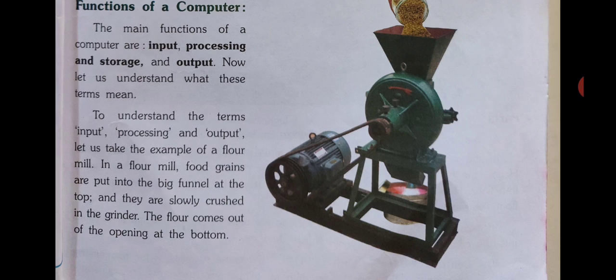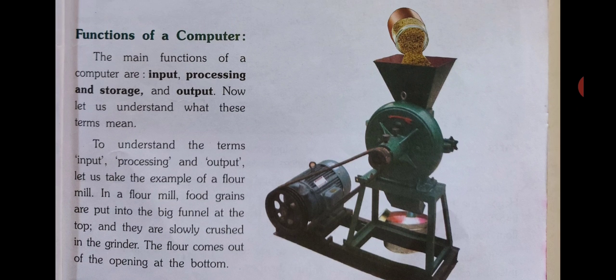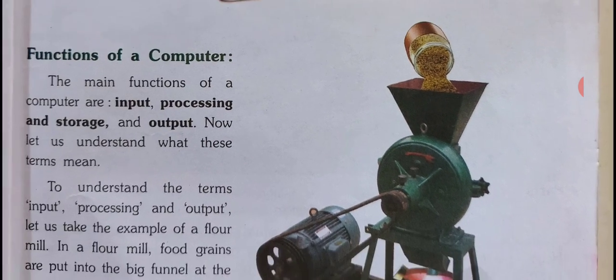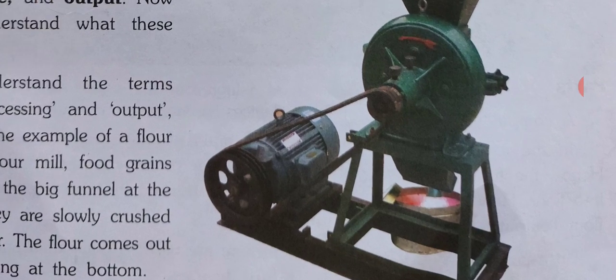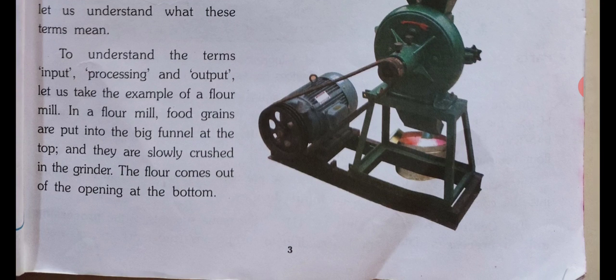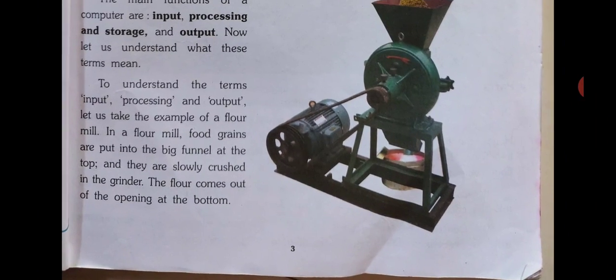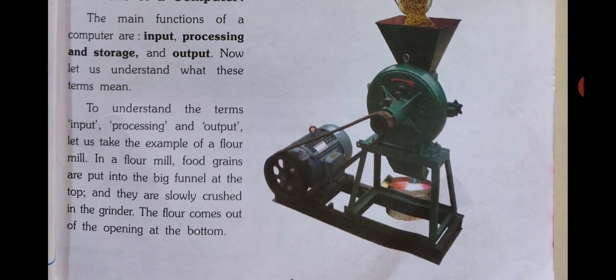Floor mill matlab hamare ghar mein jo chakki rehti hai jisme hum atta piste hai. In a floor mill, food grains are put into the funnel at the top — jo upar ke hisaab se gehu dale ja rahe hai woh input hai. And they are slowly crushed in the grinder — is machine mein woh crush hote hai matlab piste jate hai. The floor comes out at the opening at the bottom — niche woh output hota hai.